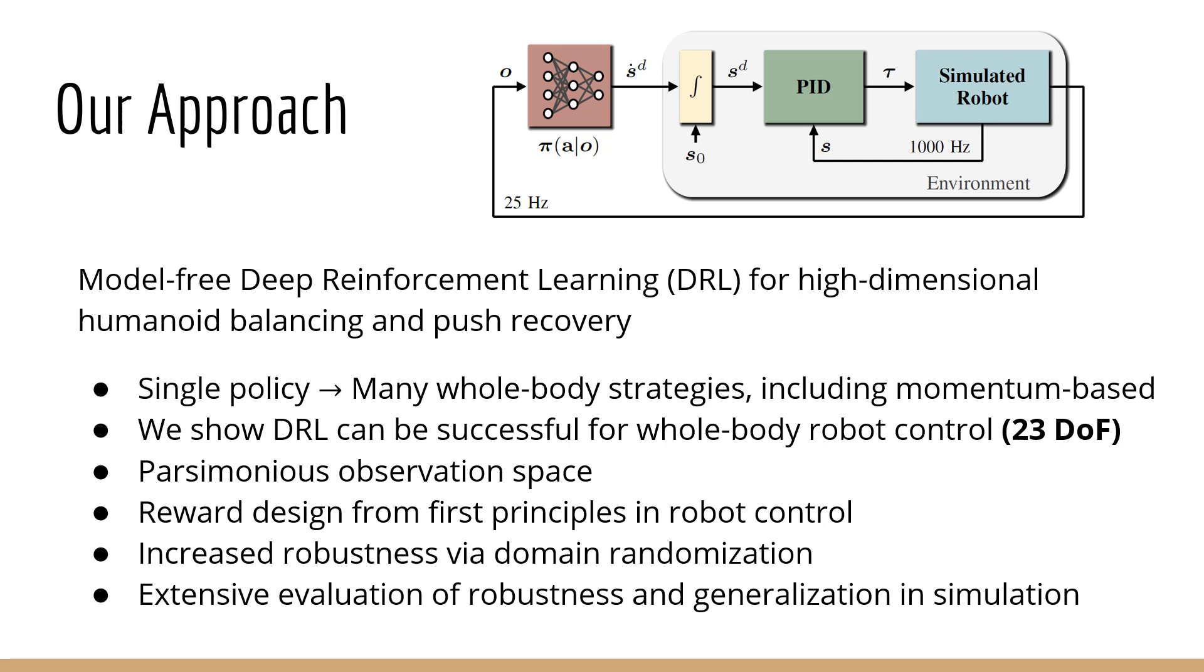We design reward components to guide learning towards steady-state balancing with transient push recovery strategies. We also show that enhanced robustness can be achieved by introducing randomization of multiple physical quantities during training. Finally, we provide an extensive experimental validation of the policy's performance and generalization in simulation.